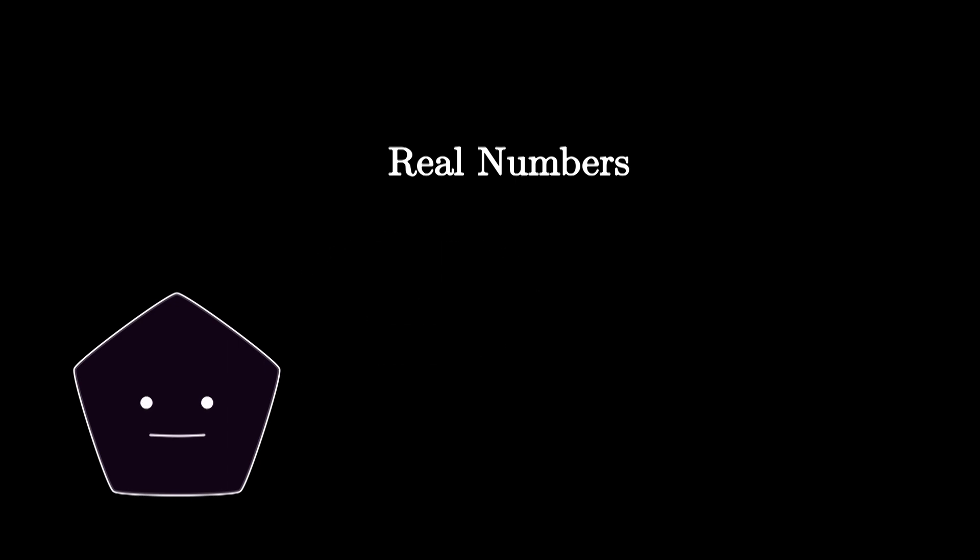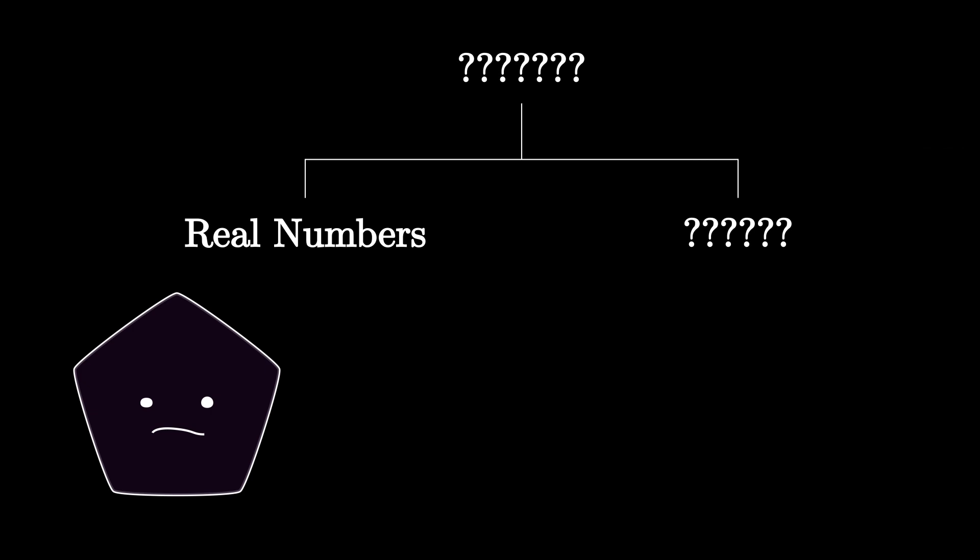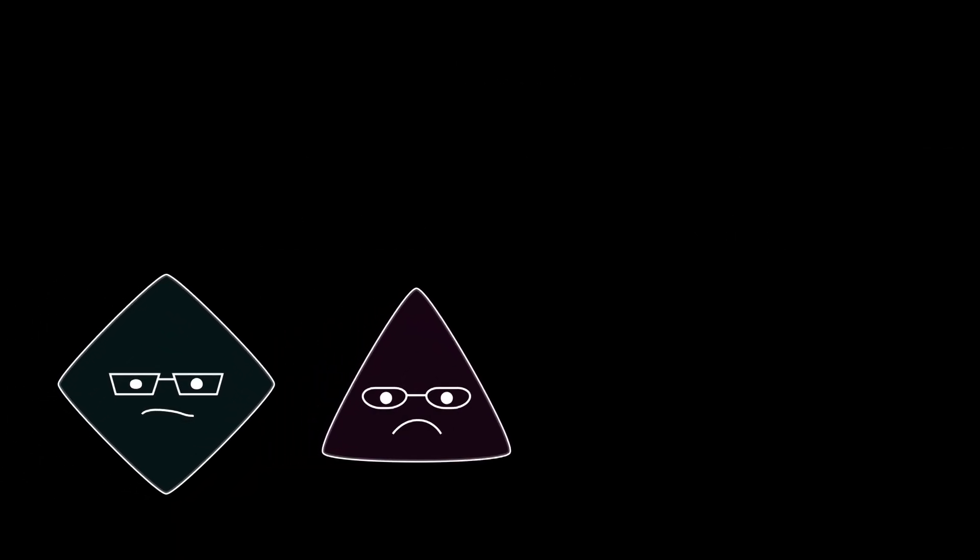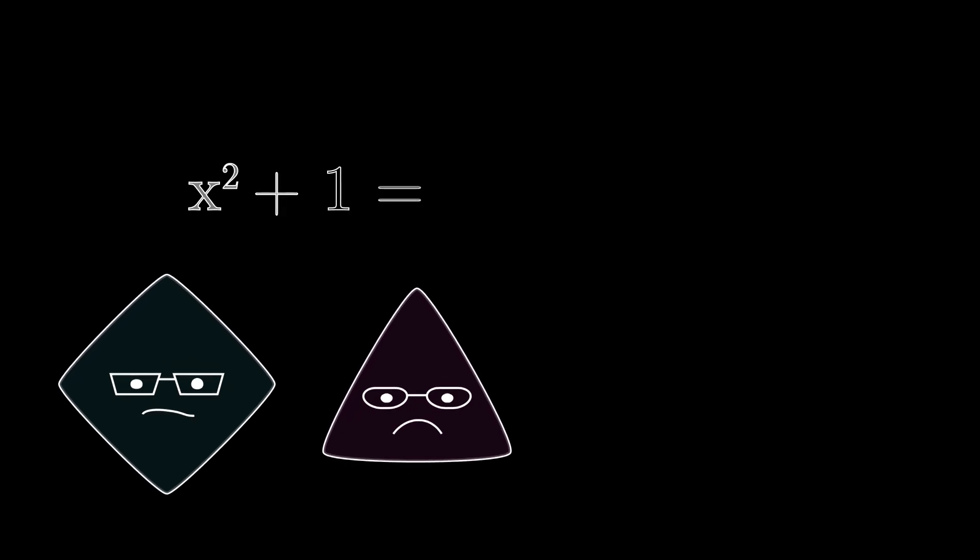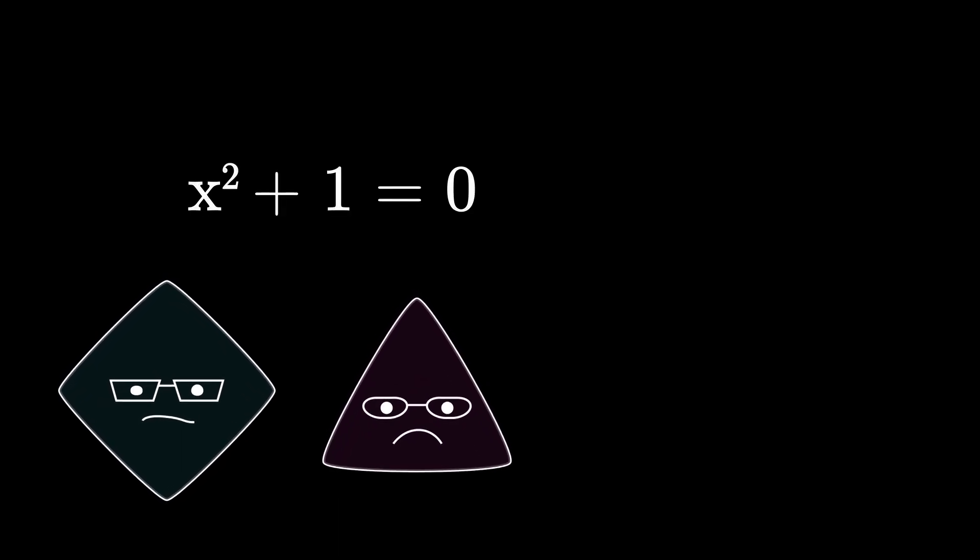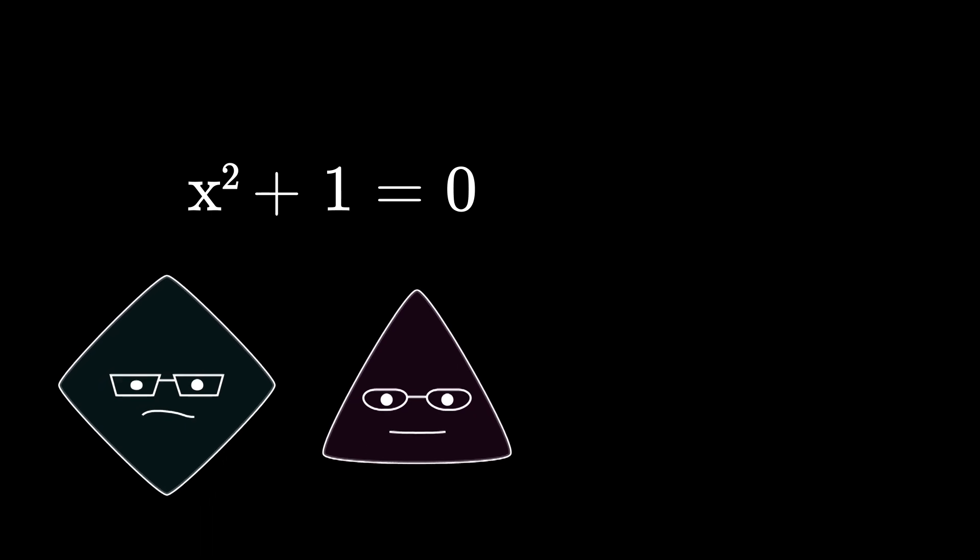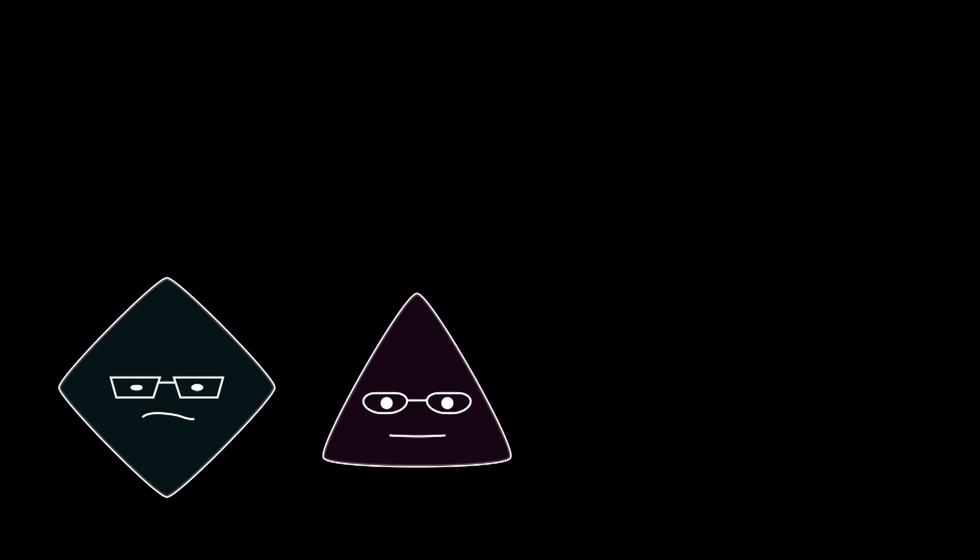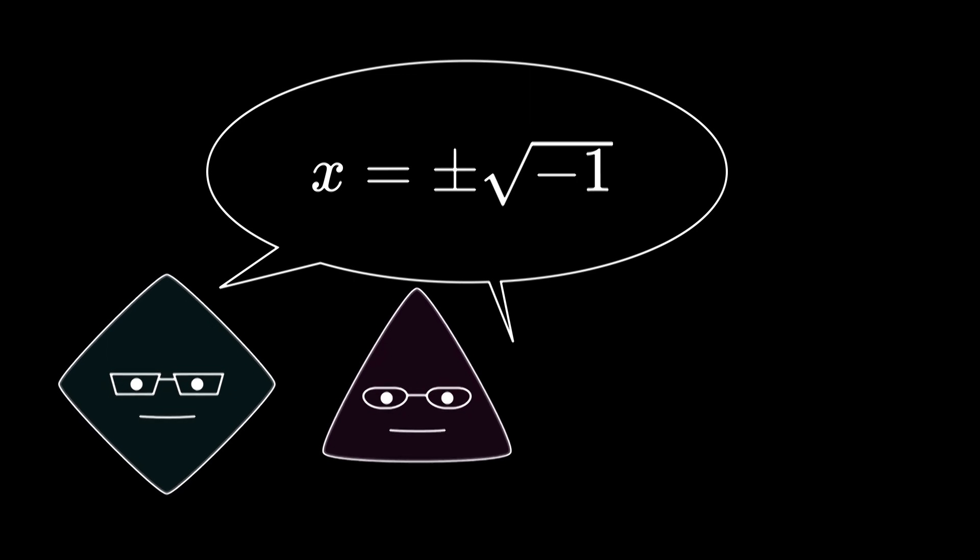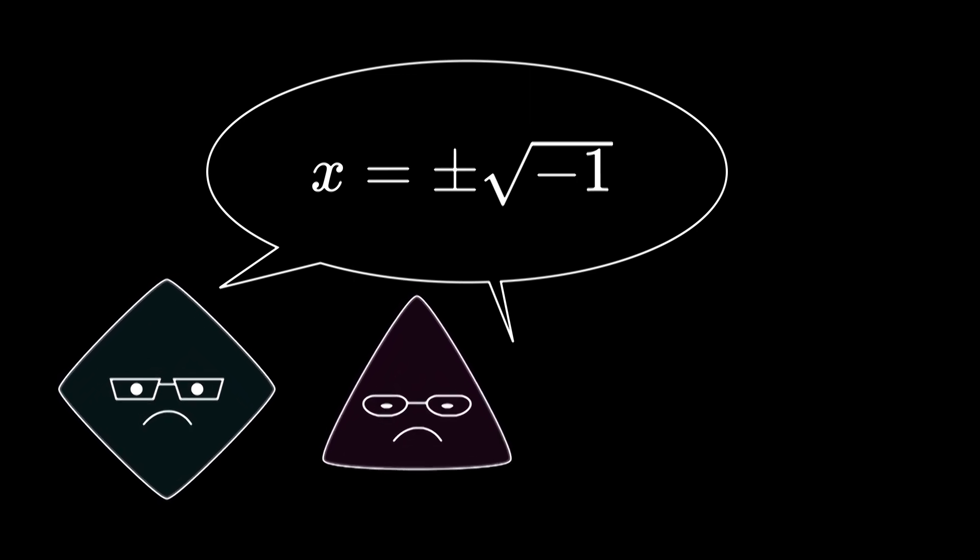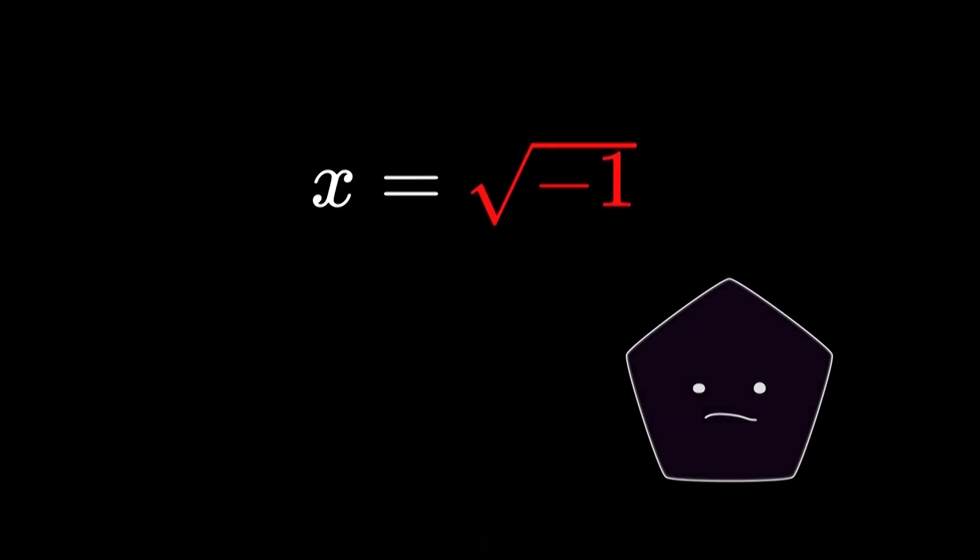But wait, is this it or is there more? Mathematicians were struggling with finding the solutions of some simple equations. For example, x squared plus 1 equals 0. Figuring out the equation, it can be found that x equals plus or minus square root of negative 1. Certainly this is not a real number that we know, and this doesn't make any sense, right?